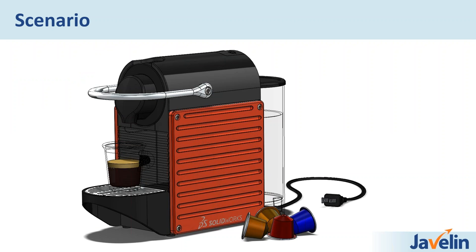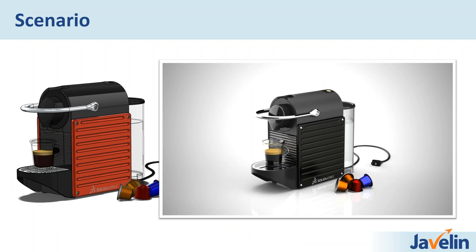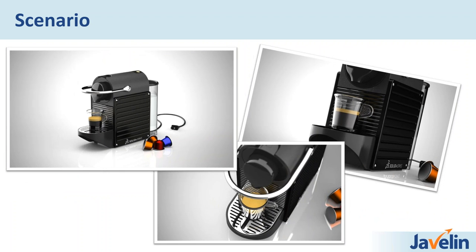We've got a scenario: an espresso machine inside SOLIDWORKS shown as a shaded-with-edges model. Right now it doesn't really scream 'I want an espresso out of this.' What we want to do is take it and make it look more like a finished render — nice camera angles, depth of field — to really make the imagery pop and give us marketing material.